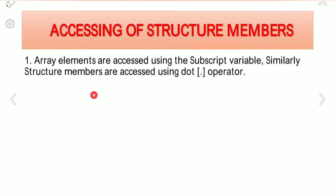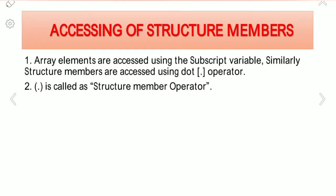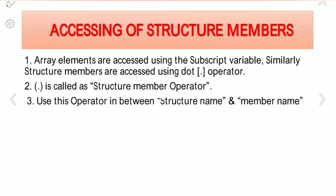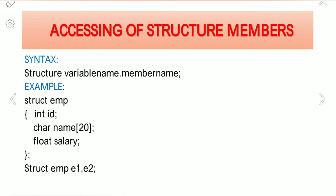Similarly, if you want to access the structure members, we have to use the dot operator. The dot operator is also called the structure member operator. We use this operator in between the structure variable name and the member name.